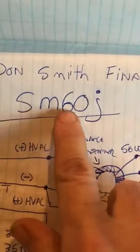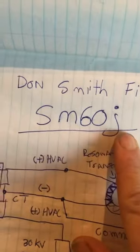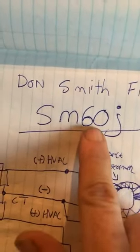Now this device I say has a potential of 60 megawatts. If you increase this device and you increase this device, you can have an output of up to 60 megawatts. This is the design. This is my Don Smith Final. This is the SM60J. Smith Machine 60 Joule.